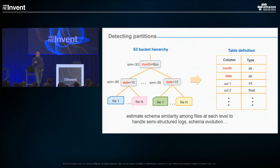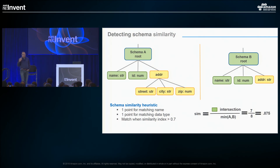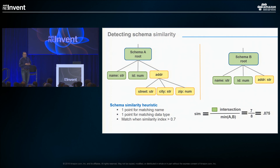It's even possible that someone stuck the wrong file into an S3 bucket — it hasn't happened to you, but it's happened to me. So how do we figure out schema similarity? The heuristic we're using now — and it will evolve over time, as a lot of this process involves getting feedback, understanding what's happening, where we make mistakes, and iterating — is basically: we figure out does the name match, does the data type match, and across these two files, does enough of it match? We look at the intersection over the minimum number of elements, and if it's over 0.7, we say these files are similar and it's part of the same table.